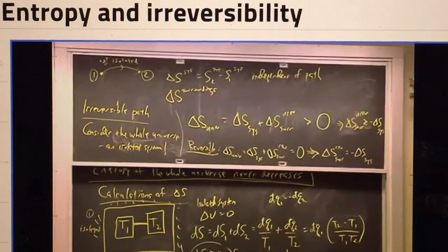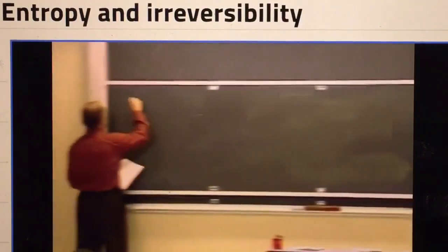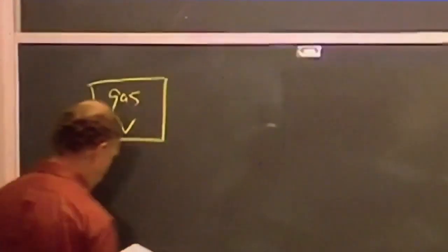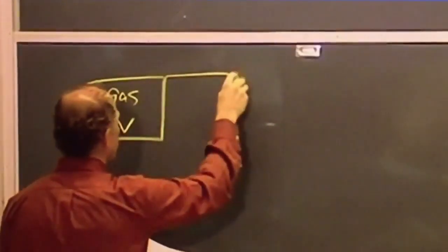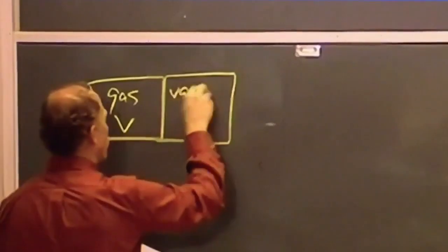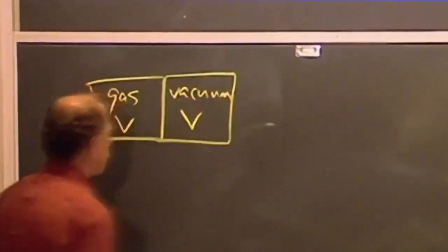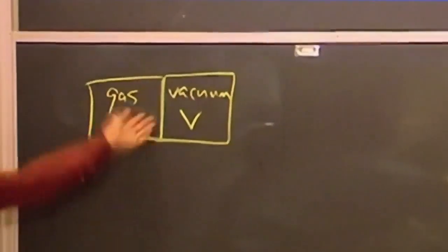All right, let's try another pretty simple process. Let's just take a gas in some volume V, and over here is going to be vacuum of equal volume, and we're going to remove the barrier.